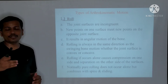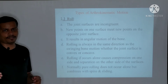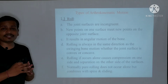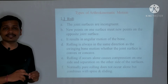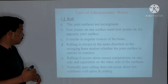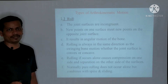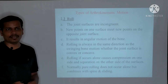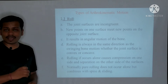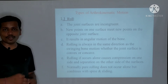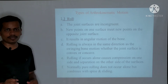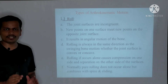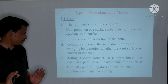In a roll, new points on one articular surface meet new points on the opposite articular surface during motion. During rolling, the joint surfaces are incongruent — meaning they are not identical. Rolling always occurs in the same direction as the angular (physiological) motion, regardless of whether the articular surface is convex or concave.